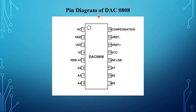The features of DAC 0808 are: fast settling time of 150 nanoseconds, high-speed multiplying input at 8 MHz rate, non-inverting digital inputs that are TTL and CMOS compatible, power supply voltage range of 4.5 volts to 18 volts, and low power consumption of 33 milliwatts.